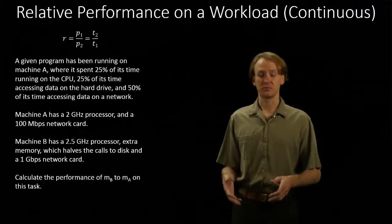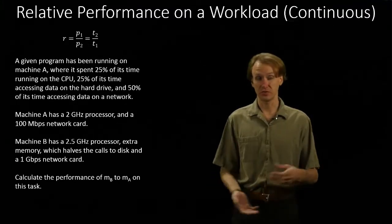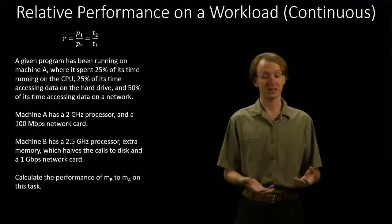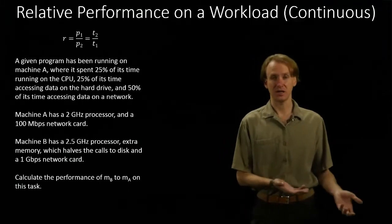In this case, we're saying that machine A spends 25% of its time on the CPU, 25% of its time accessing a hard drive, and 50% of its time accessing a network.